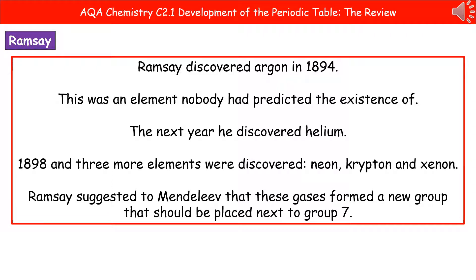At this point, the periodic table was still not done. In 1894, another scientist called Ramsey discovered an element called argon — an element that took everyone by surprise because no one had expected it to exist. Then the next year, he discovered helium. By 1898, three more had been discovered: neon, krypton, and xenon. Ramsey suggested to Mendeleev that these gases formed a whole new group that should be placed next to group seven. The key reason these hadn't been discovered until then was because they are unreactive, so they wouldn't have turned up in other experiments — no one had any idea they were there until Ramsey's work.